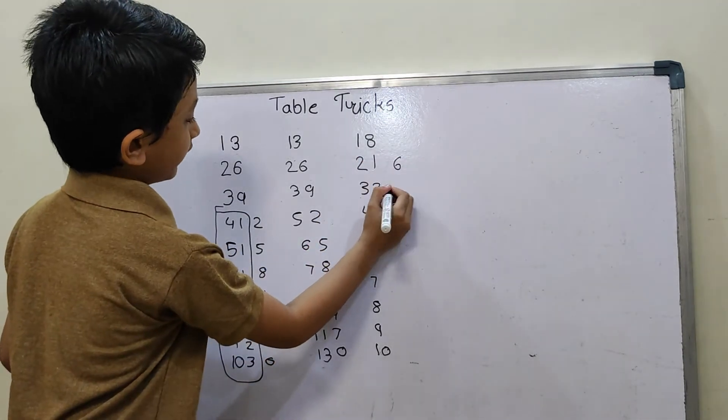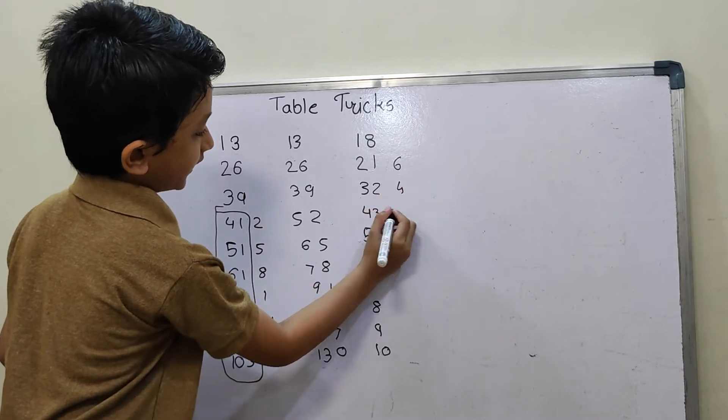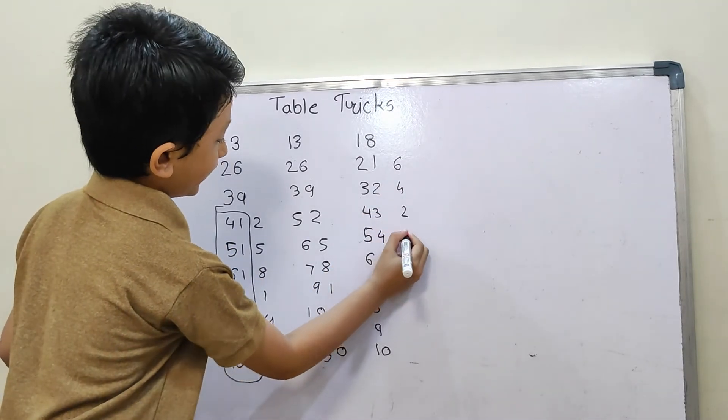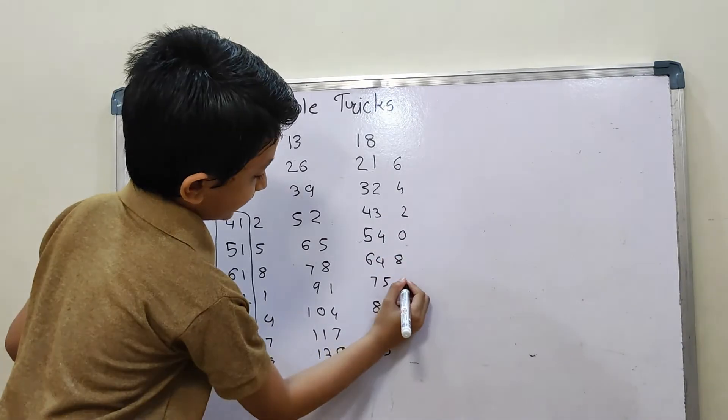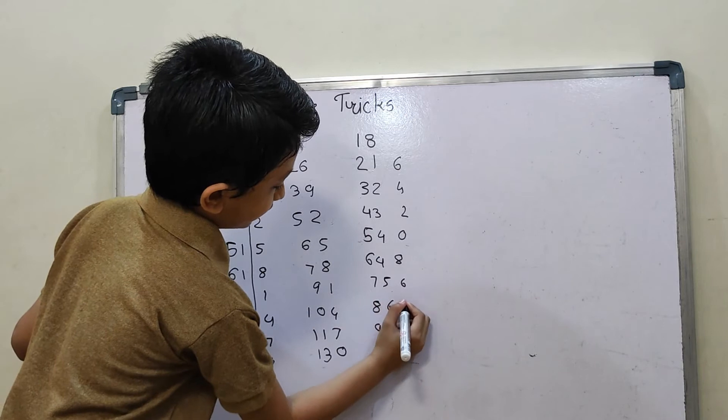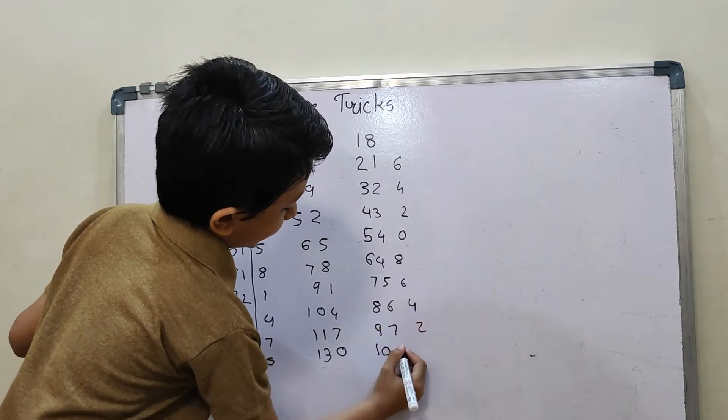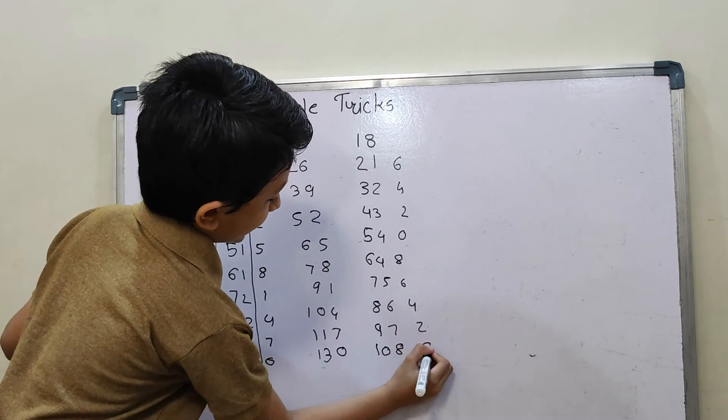8 times 3 is 24, 8 times 4 is 32, 8 times 5 is 40, 8 times 6 is 48, 8 times 7 is 56, 8 times 8 is 64, 8 times 9 is 72, 8 times 10 is 80.